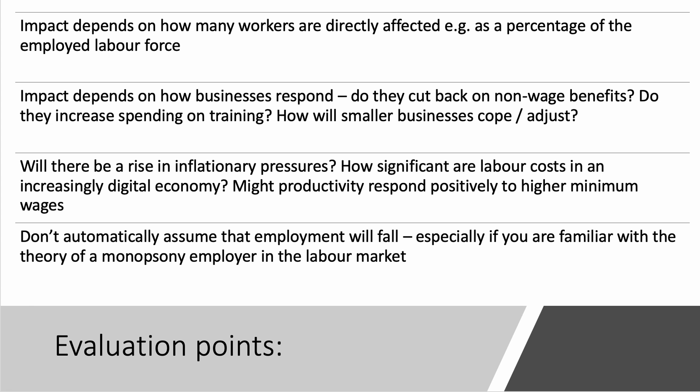Crucially, I really want my students, if they're going to evaluate this properly, not to make automatic assumptions. Challenge assumptions whenever you can. Most students on minimum wage questions automatically assume that the demand for labour will fall, this will create significantly higher unemployment and many people will be made worse off. Please don't automatically assume that employment will fall, particularly if you're familiar with the theory of monopsony and the impact of a minimum wage on a monopsony employer in the labour market. There are many economists out there who've challenged the assumption that a minimum wage automatically costs jobs — because the reality is that in many cases, it doesn't.